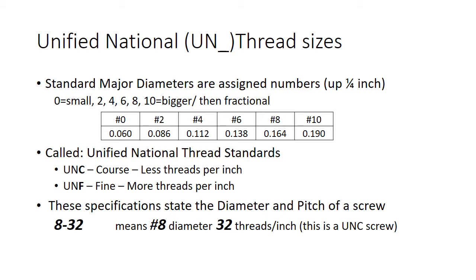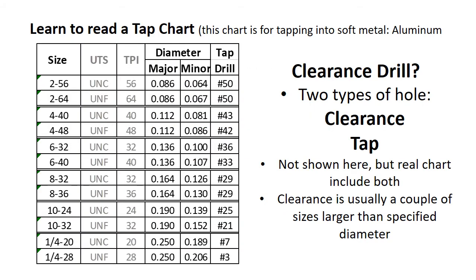For example, if you have a screw called an 8-32, that means it has a major diameter of 0.164 inches and 32 threads per inch — that is the coarse thread. The fine thread for a number eight is an 8-36, which has 36 threads per inch. The 6-40 and 6-32 are another example — you can see the major diameter and the difference between the coarse and fine versions.